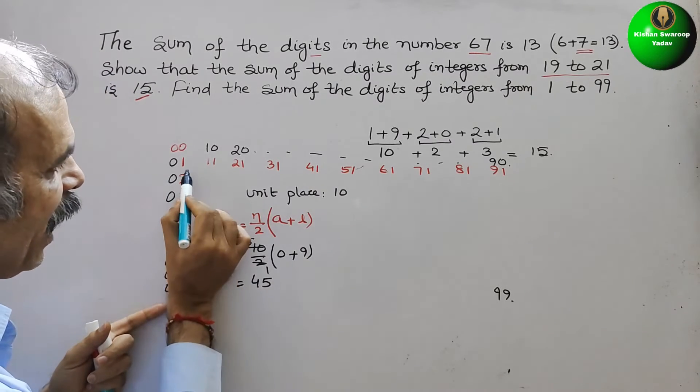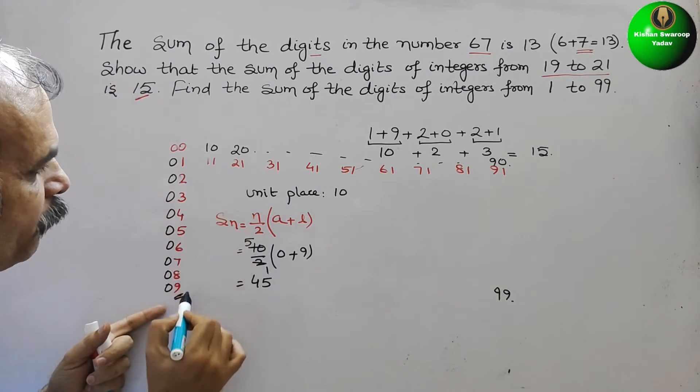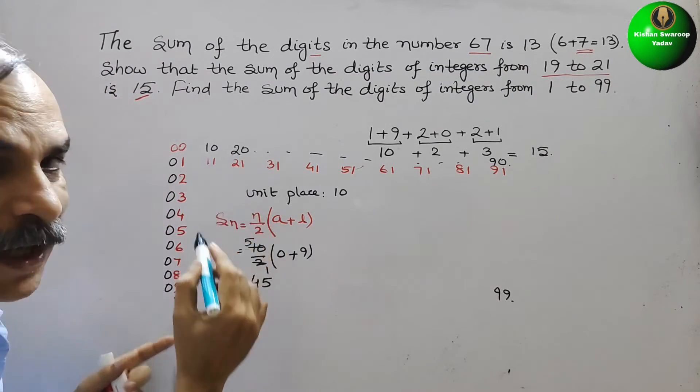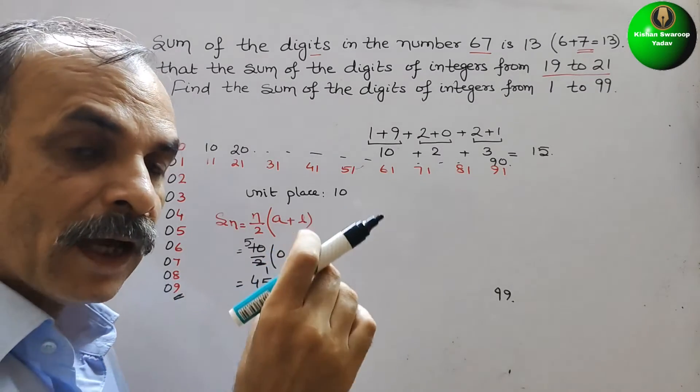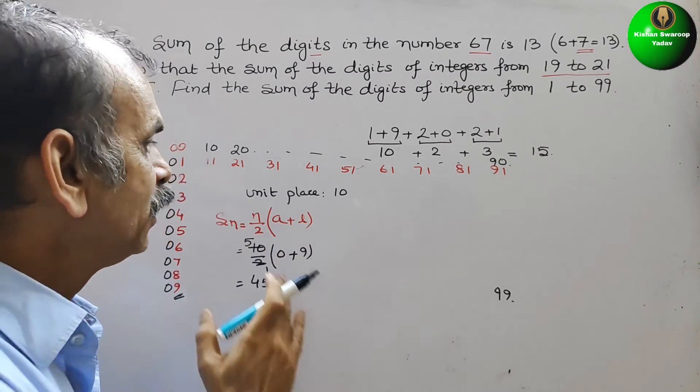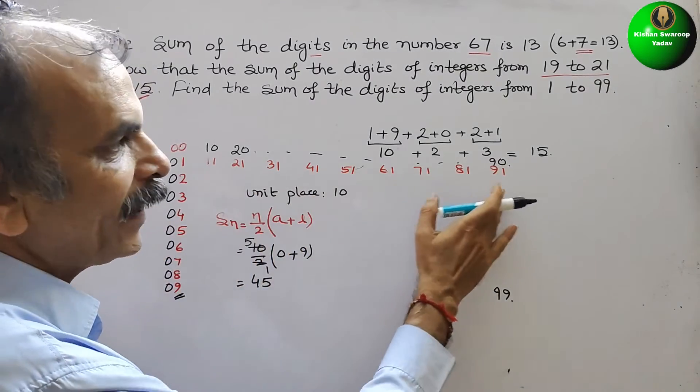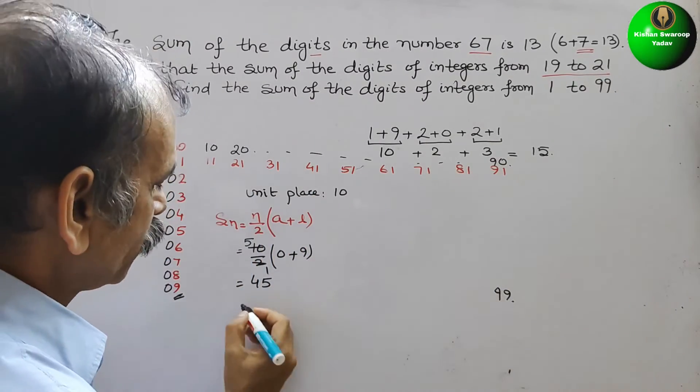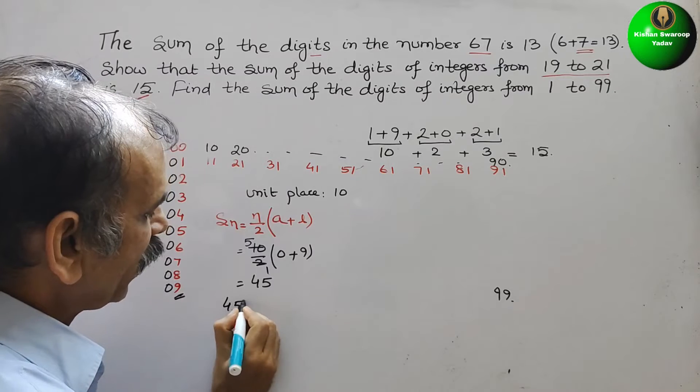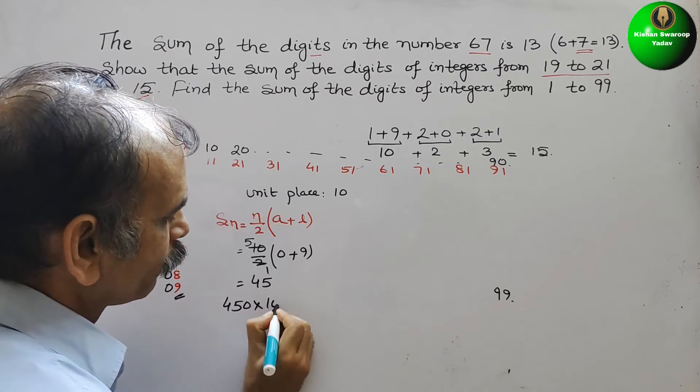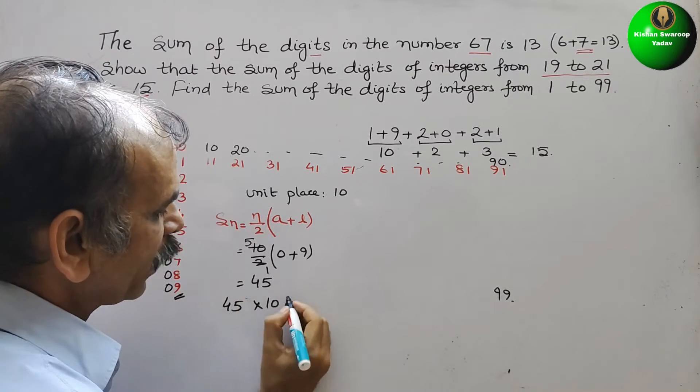But you can see, everywhere this unit place will be there. 11, 12, 13, 14, everywhere it will be there. That means we have to multiply it by 10 times. So now it will be 45 into 10 is 450.